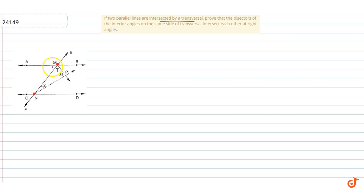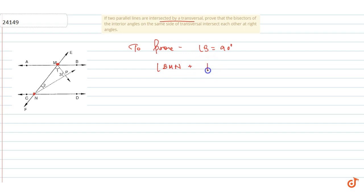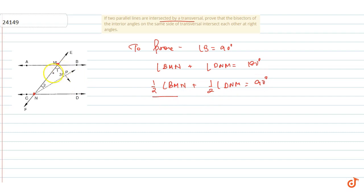We have to prove that these angle bisectors meet at a right angle — that is, angle 3 is equal to 90 degrees. We know that the sum of interior angles on the same side of the transversal equals 180 degrees. So angle BMN plus angle DNM equals 180 degrees. Therefore, half of angle BMN plus half of angle DNM equals 90 degrees.